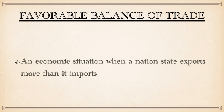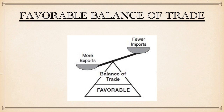Favorable balance of trade is an economic situation when a nation-state exports more than it imports. For all these countries, that was important — if you were exporting more than you were importing, then you were making money.